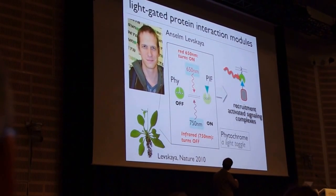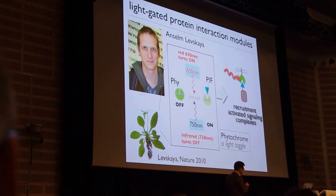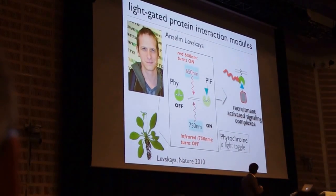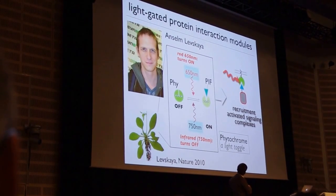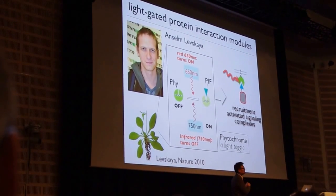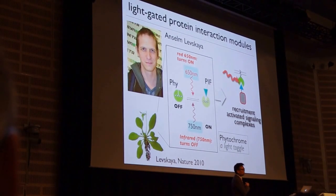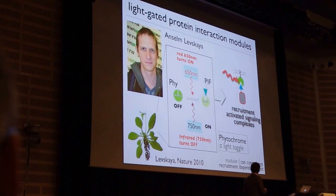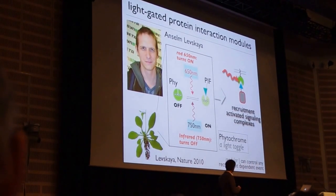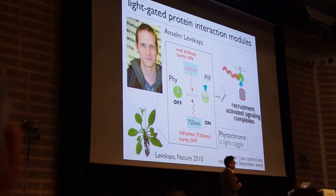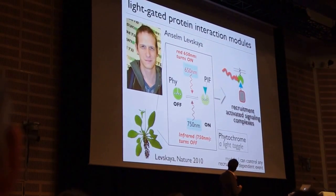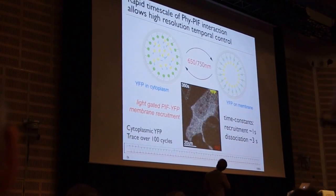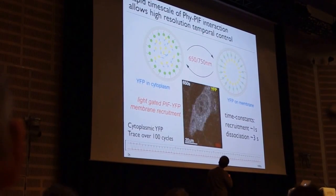Many signaling behaviors are regulated by recruitment and association, much as we learned from Tony's seminal work with SH2 domains. And so if you have a protein like this and you hook it up to this light-gated interaction, you can often now control the activity of that signaling protein with light. What's really great about this is it's very modular, and in principle you can control any kind of recruitment-dependent event with the Phytochrome system. Another thing to highlight is the rapid timescale in which the Phytochrome system can be utilized.